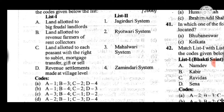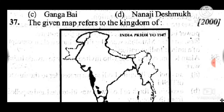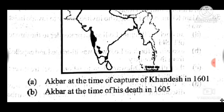Question 36: Who among the following streamlined the Maratha administration after Sambhaji? Answer is B, Balaji Vishwanath. Question 37 is a map-based question — the map given refers to the kingdom of Akbar at the time of his death in 1605.